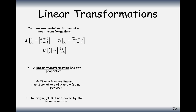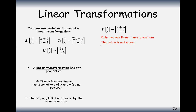For transformation T, if x and y are both 0, you'll end up with 0 on the top and 0 on the bottom. But for transformation S, if x and y are 0, you'll still get 4 on the top and minus 1 on the bottom — so that moves the coordinate (0, 0). Under the second rule, transformation S is not a linear transformation because the origin is moved. It does only involve linear combinations of x and y — no powers — but the origin does move.